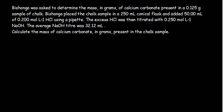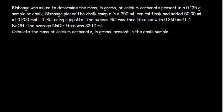Look at this question to help us understand what is basically happening. Bishonga was asked to determine the mass of calcium carbonate present in a 0.125 gram sample of chalk. Bishonga placed the chalk sample in a 250 milliliter conical flask and added 50 milliliters of 0.2 moles per liter of HCl using a pipette.